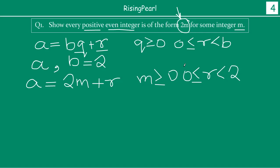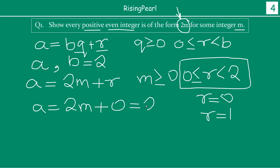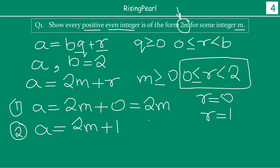Looking at the value of r — r can be 0 or 1. So we can rewrite the equation: if r equals 0, then a equals 2m. If r equals 1, then a equals 2m plus 1. These are the two ways we can expand this, where m is any integer greater than or equal to 0, so m can be 0, 1, 2, 3, 4, 5, 6, 7, 8, and so on.